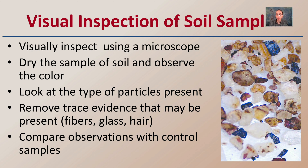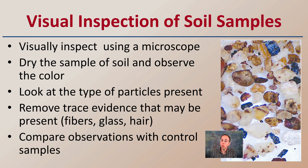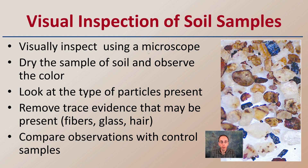When inspecting a sample of soil visually — which can also be done under a microscope — we want to dry the sample and observe its color once dry. We look at the particles that are present, and we want to remove any trace evidence we may find, such as fibers, glass, or hair. Then we compare our observations with control samples, comparing crime scene soil to suspected or potential scene samples.